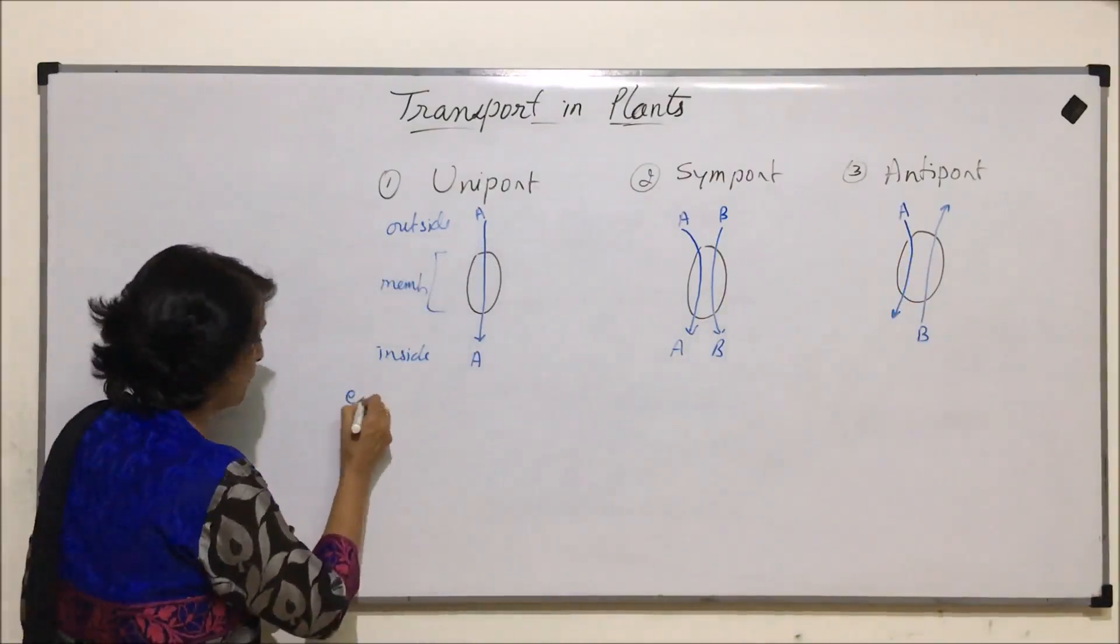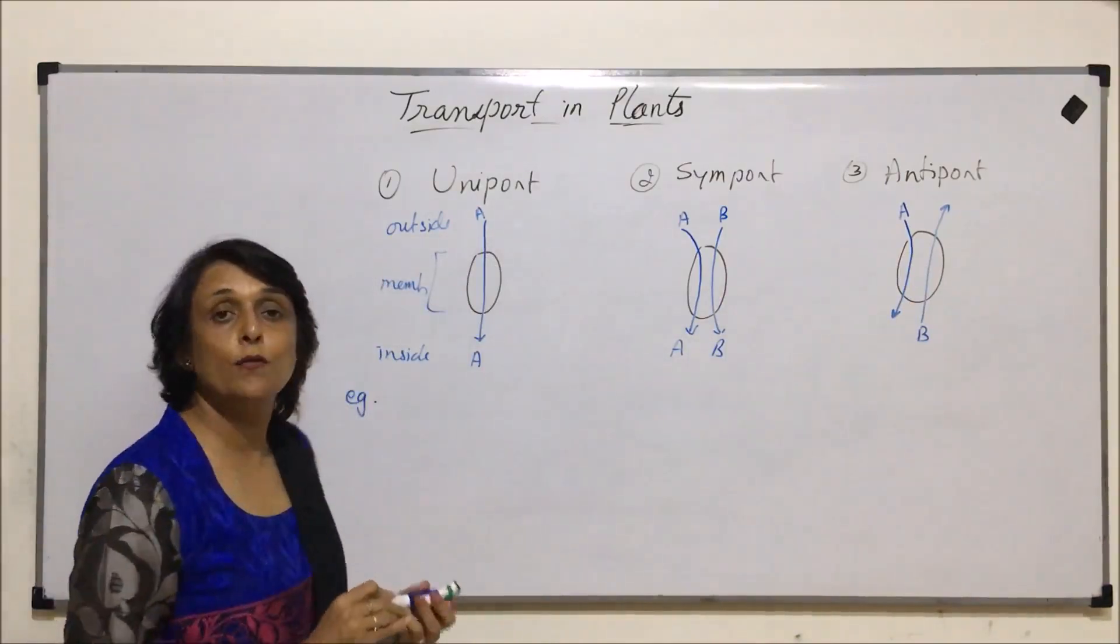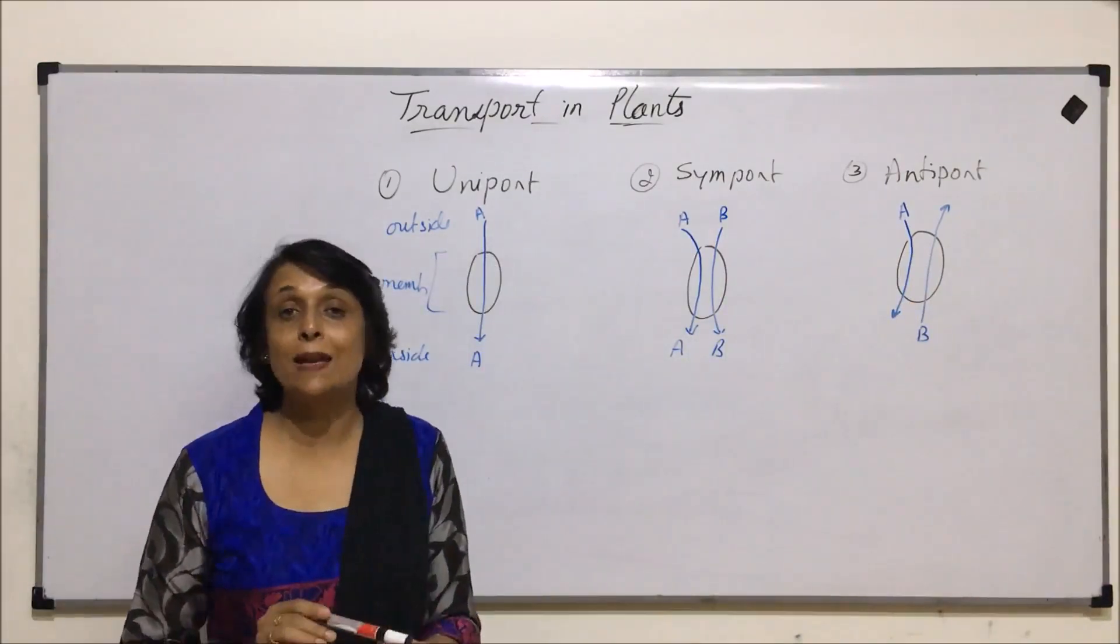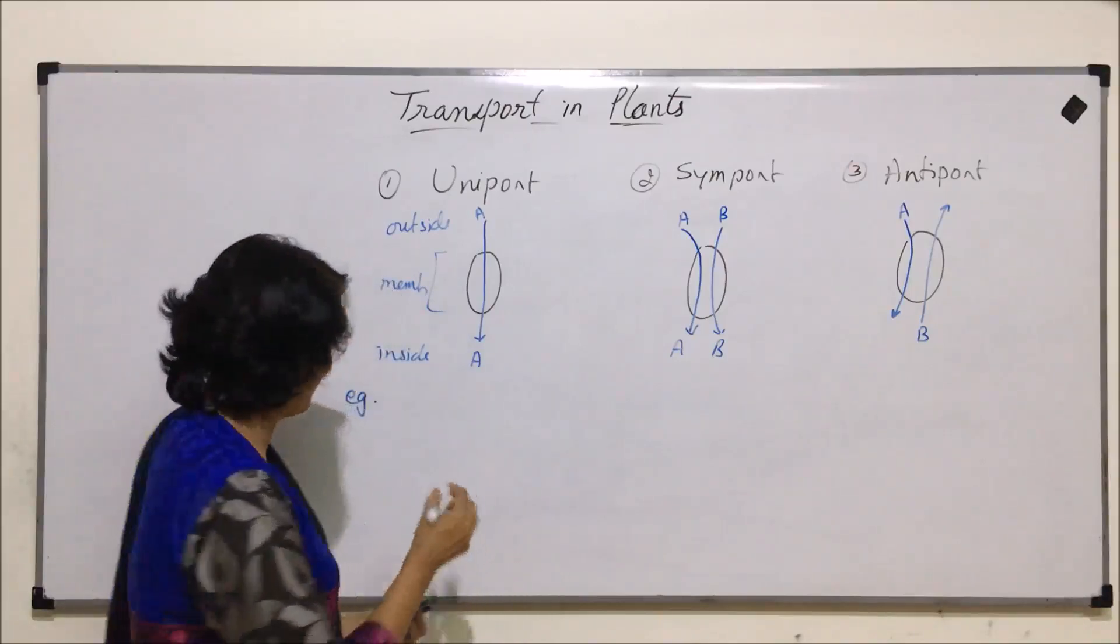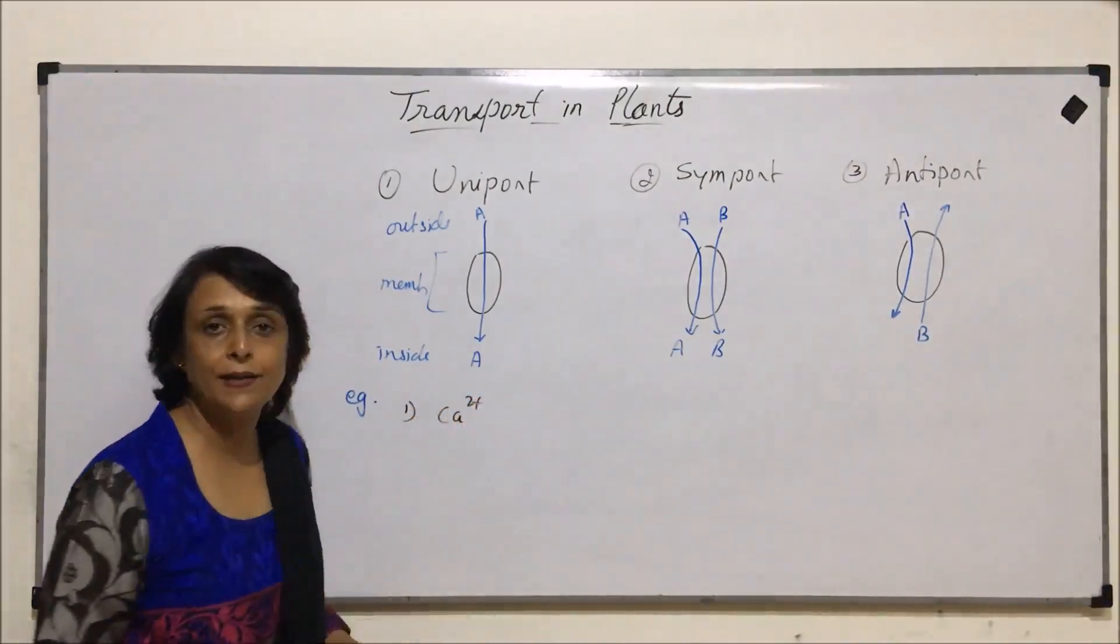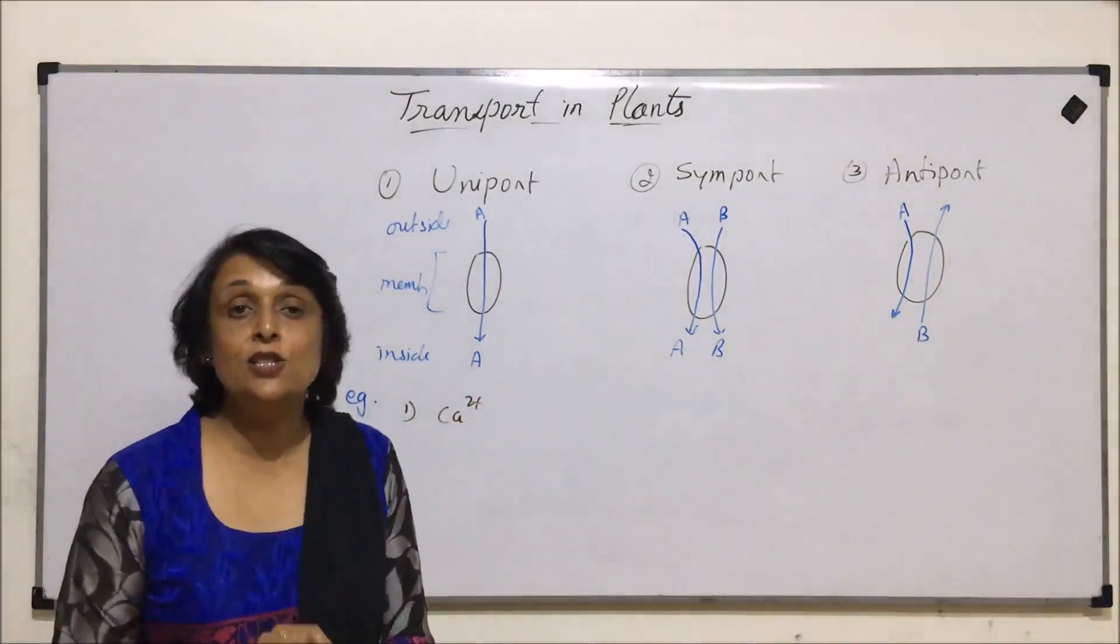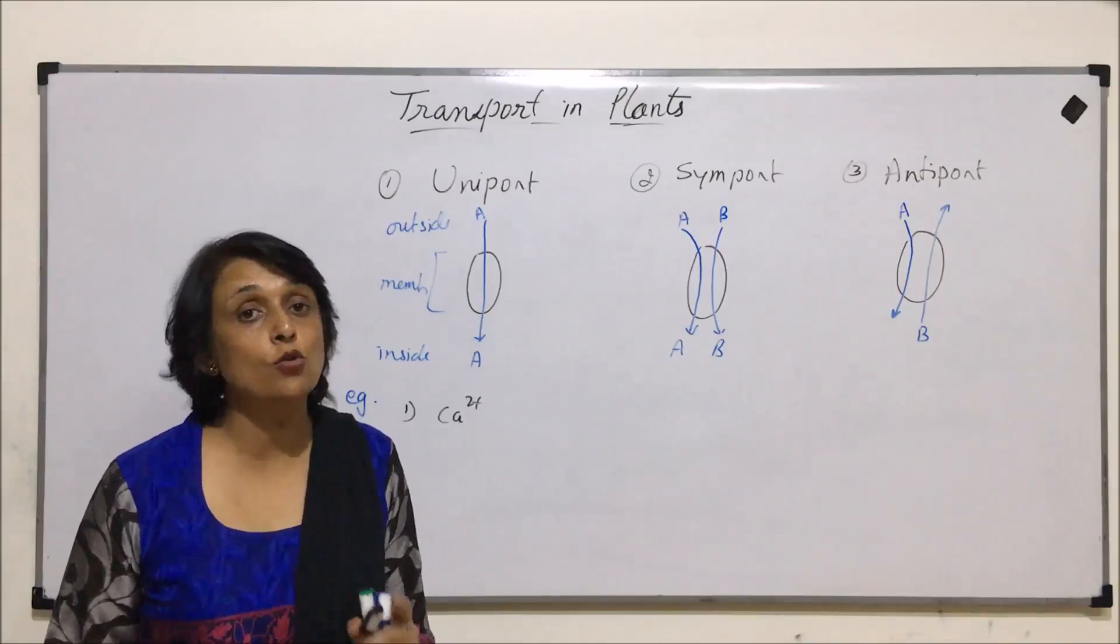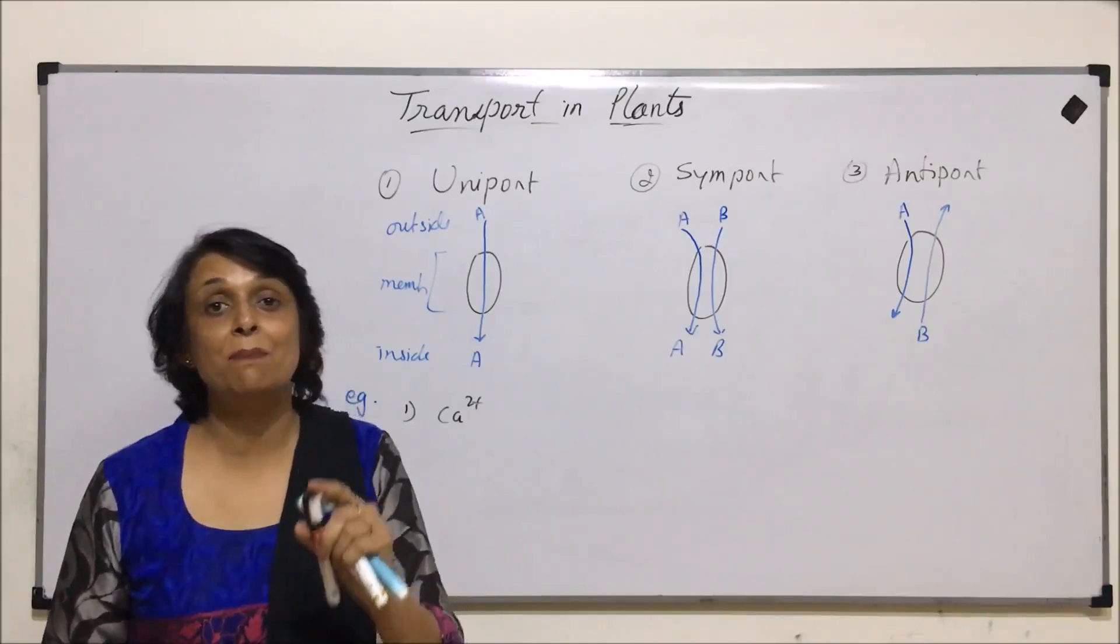Now let us take examples of these. The example of uniport transport can be calcium ions. One example: release of calcium ions when these calcium ions have to go into the presynaptic membrane.